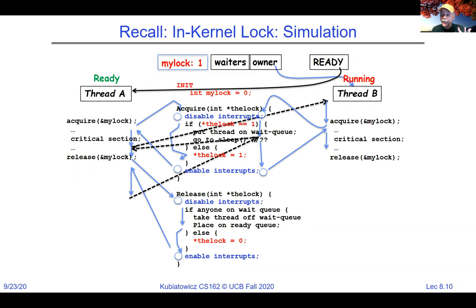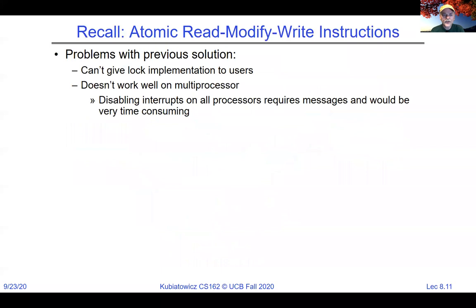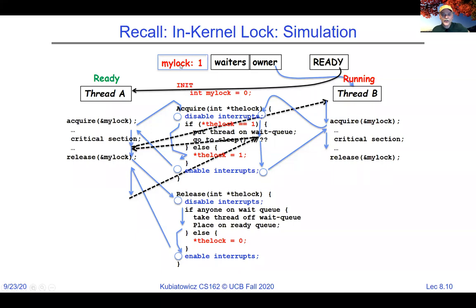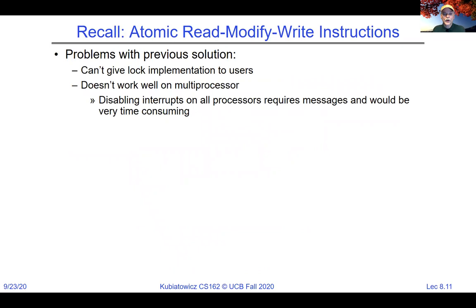Of course, if we actually have to put somebody to sleep, we have to go into the kernel — but that's already a long operation, so doing a system call at that point to put them to sleep is probably the right thing. The other more subtle problem is this doesn't work on a multiprocessor or multicore. When you disable interrupts, you're only disabling them for one processor, so another processor could still interfere with the lock variable.